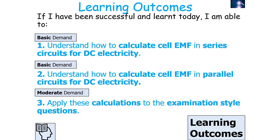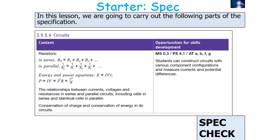If we've been successful in today's lesson we should be able to understand how to calculate the total cell EMF in a series circuit, how to calculate the total cell EMF in a parallel circuit, and then apply these calculations to examination style questions. We're going to be looking at AQA A-level physics specification 3.5.1.4 circuits.